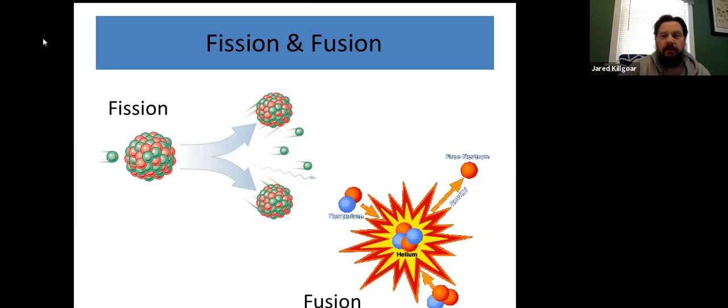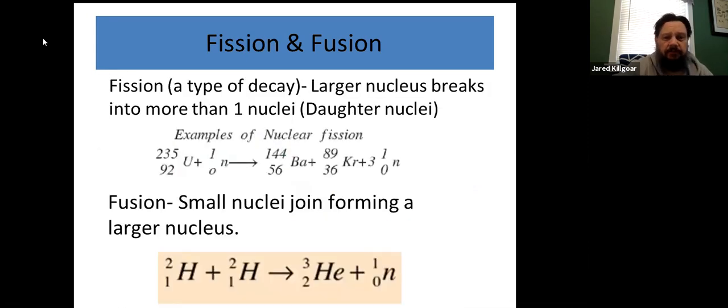All right. And if you guys took our systems, you might recognize these terms as well. Here's a couple examples of, here's a fission reaction and a fusion reaction, along with the definitions. So fission is a type of decay, which a larger nuclei breaks into multiple nuclei, called daughter nuclei.